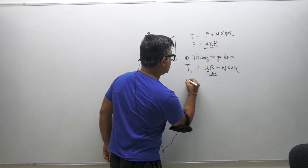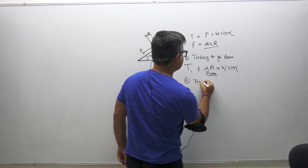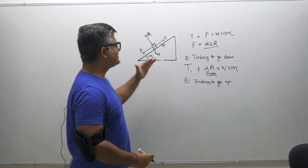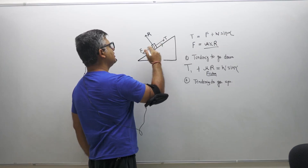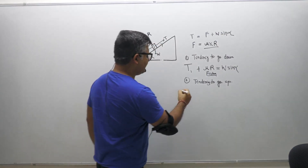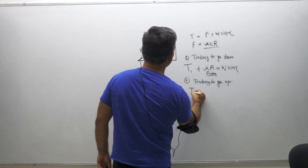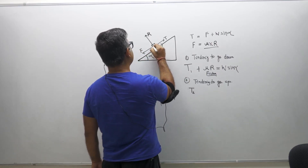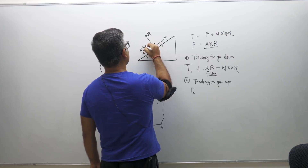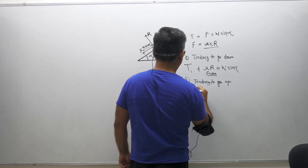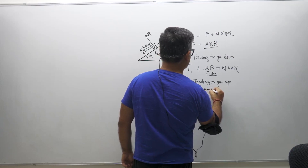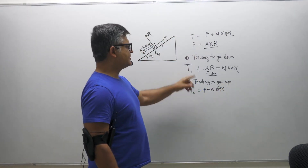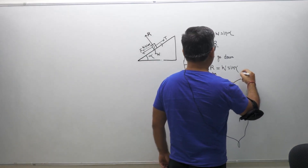Situation number two: the body has a tendency to go up. If the body has a tendency to go up, the force of friction acts downward. Therefore the tension needed to maintain equilibrium equals W sin α plus μR — a higher value of tension is required in this case.